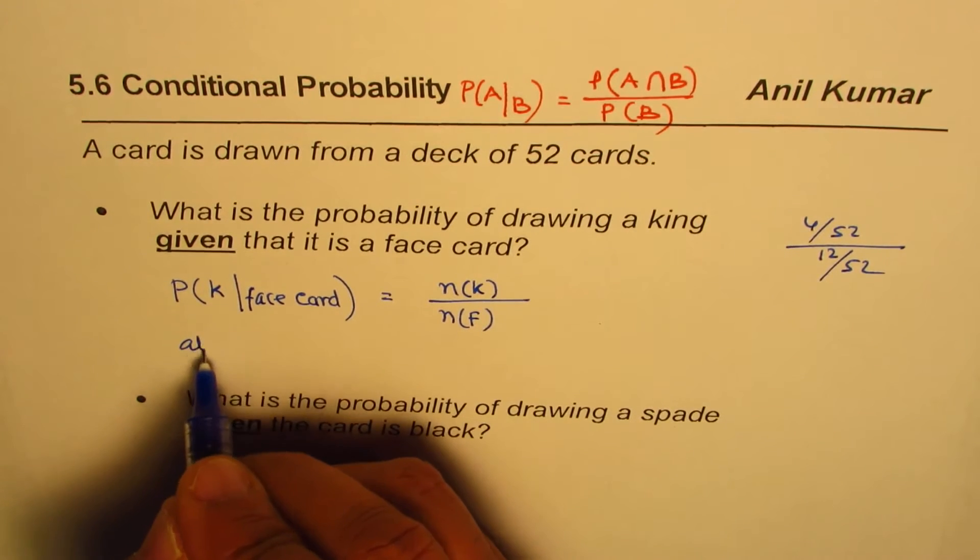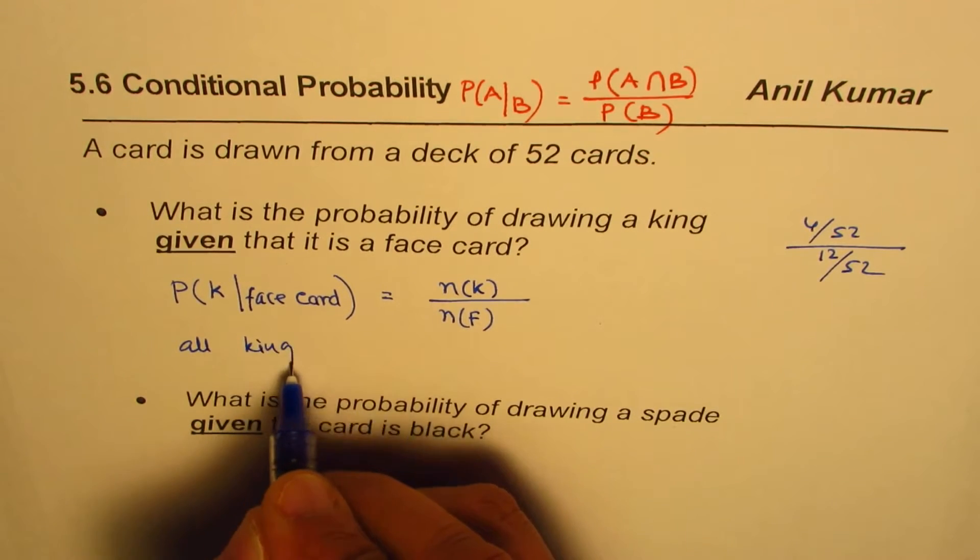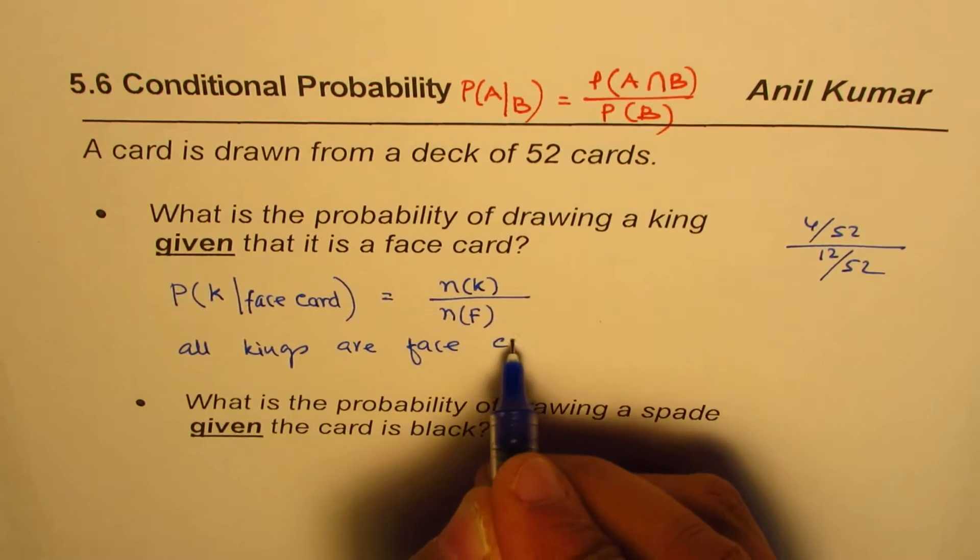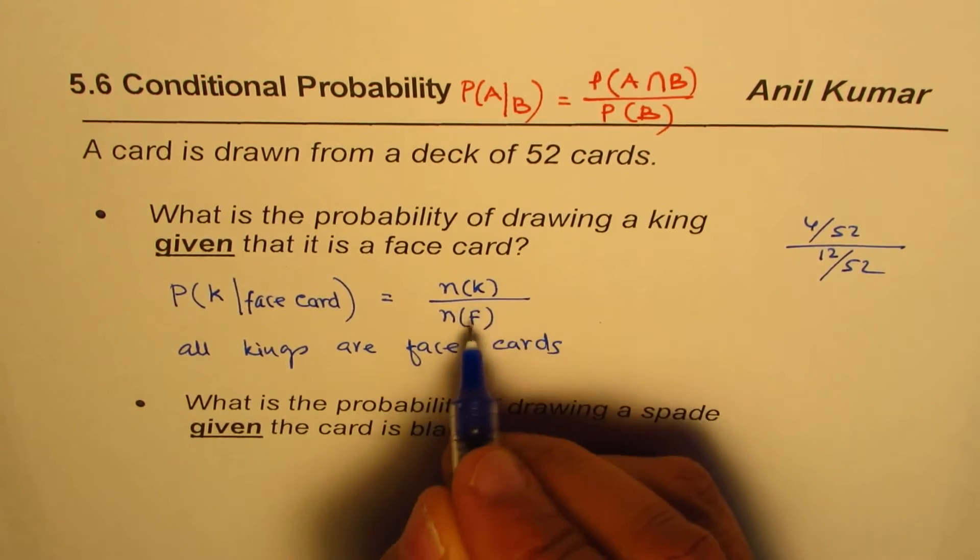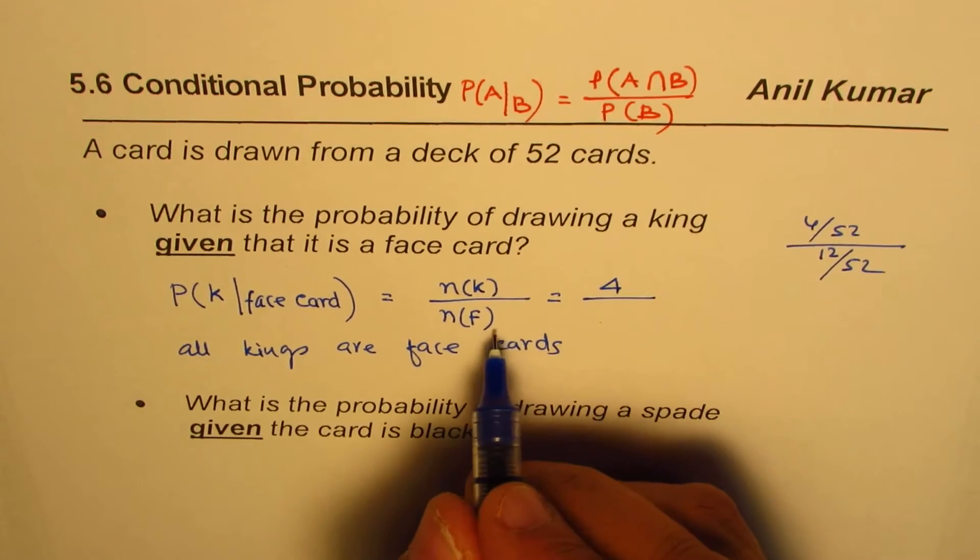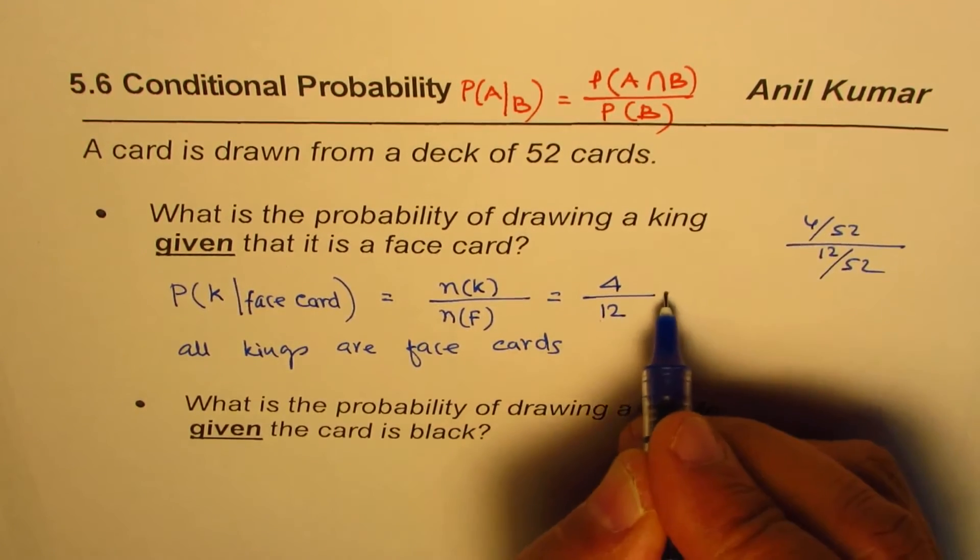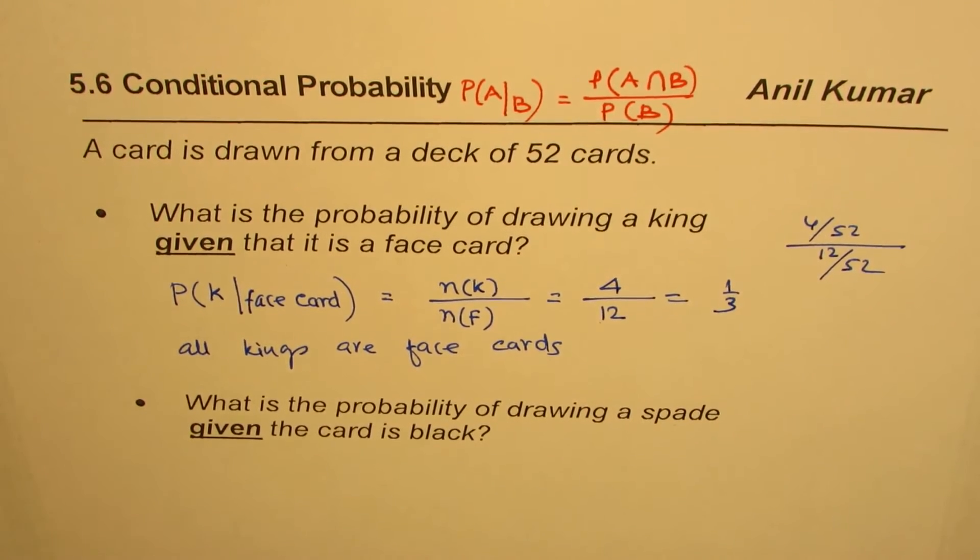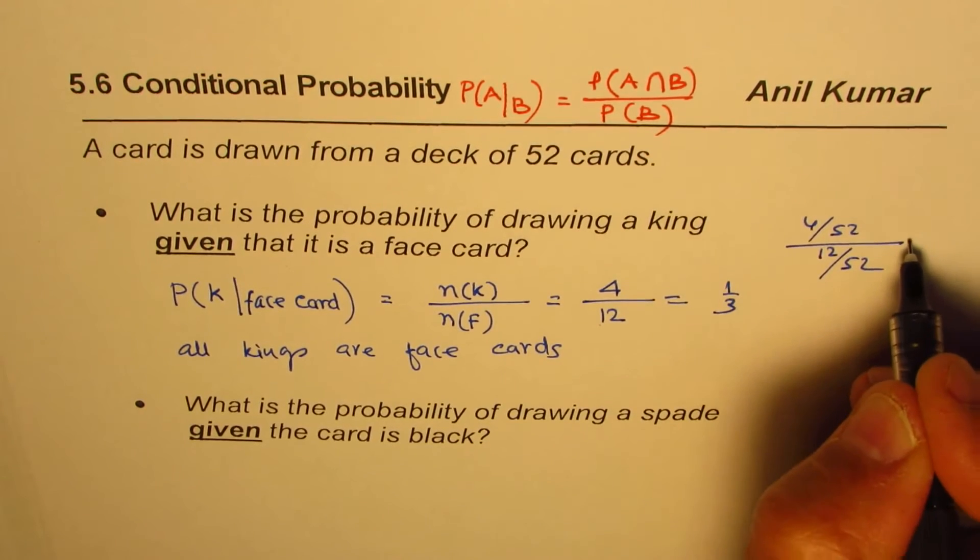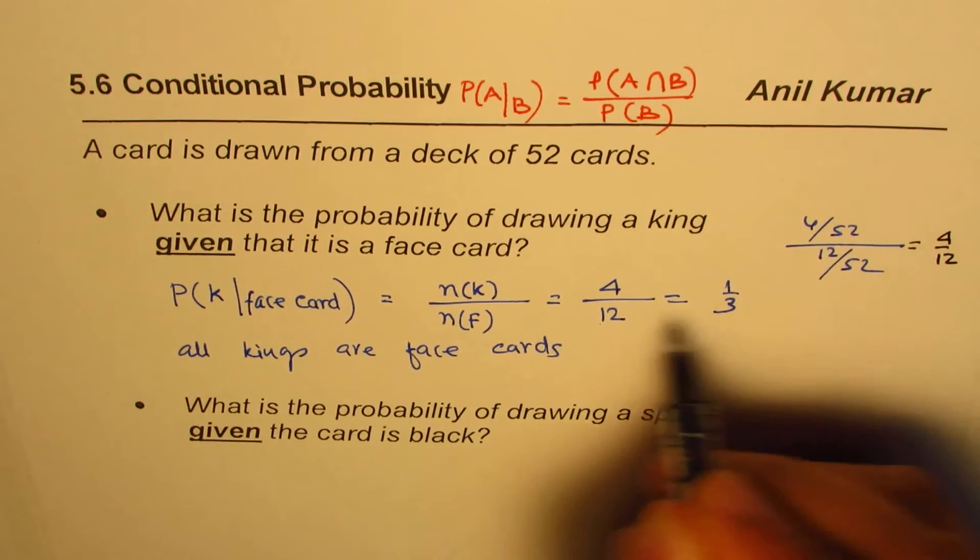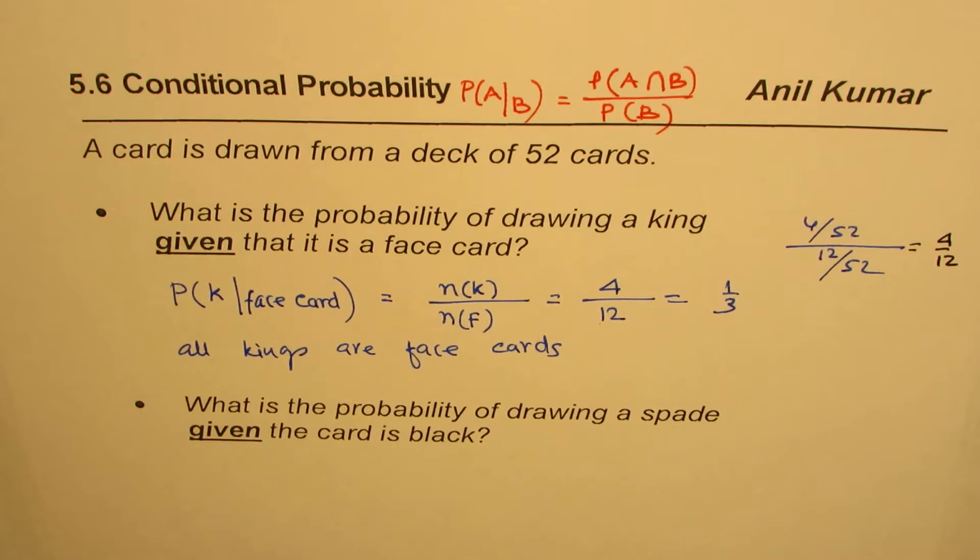Since all kings are face cards, the intersection is common. So we have 4 over the total number of face cards, which are 12. So we get 4 over 12, or the answer is 1 over 3. Do you see that? So you could get conditional probability answers straight without using this complicated formula. Here also it is the same thing - 4 over 12 which simplifies to 1 over 3.